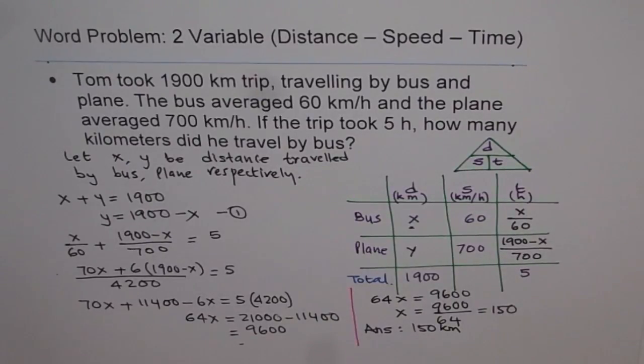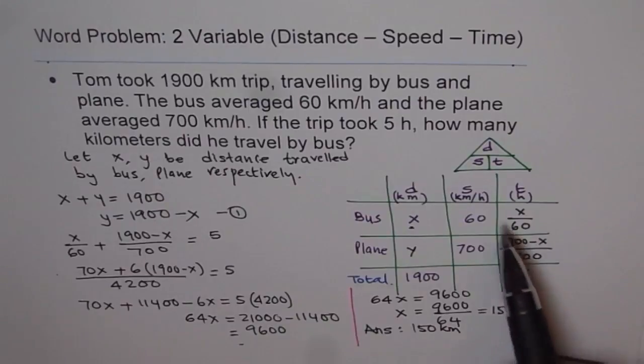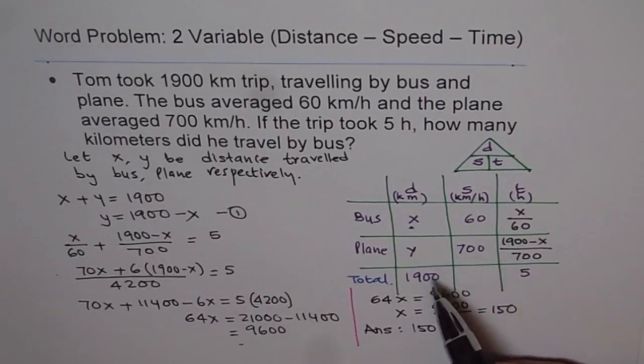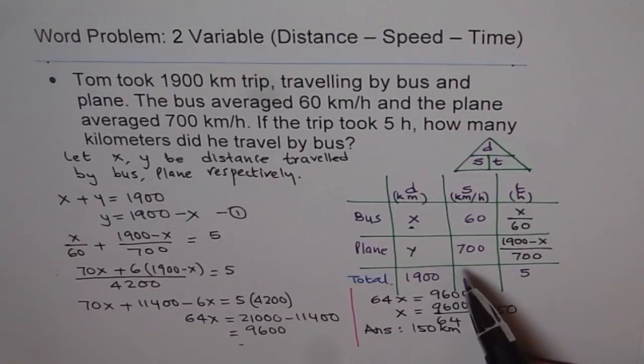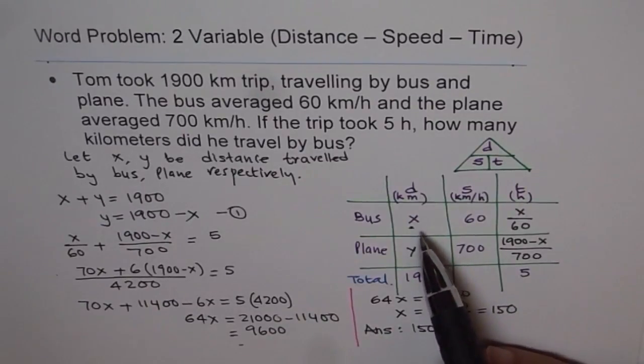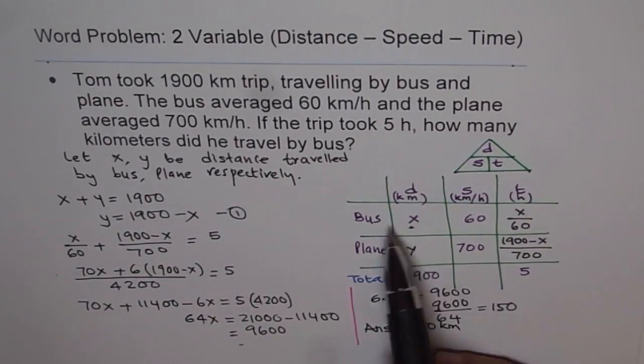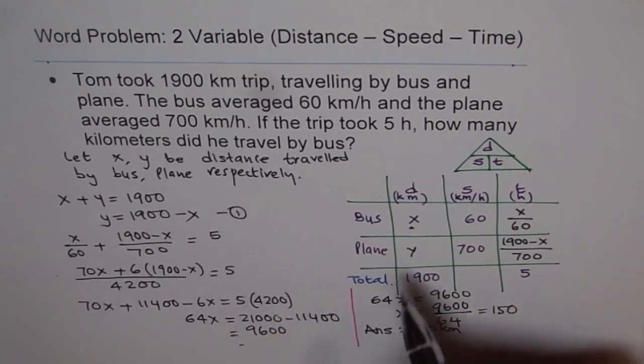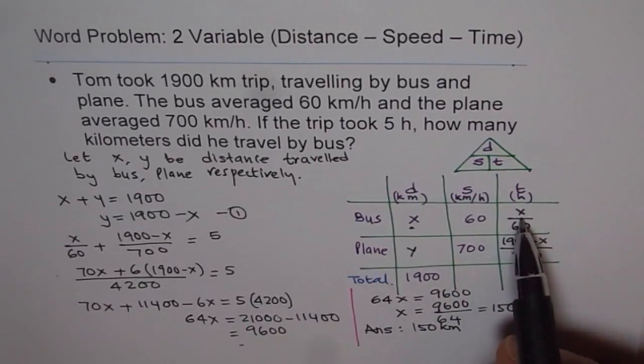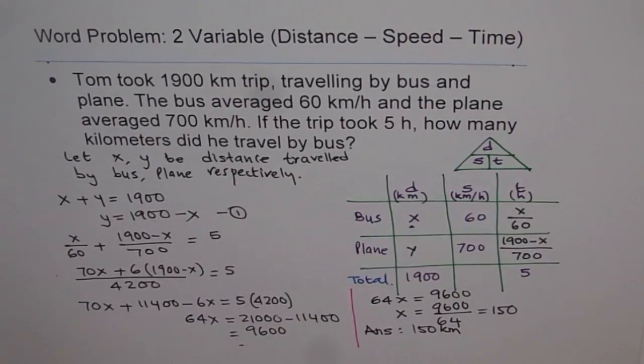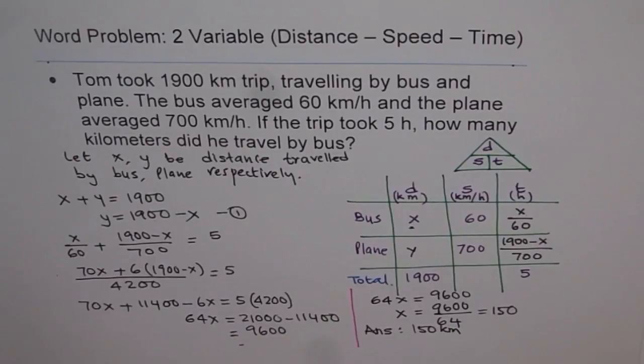So the strategy here is: first, put the information properly in a tabular form. Like we have distance, speed, time. Knowing the relation that distance is speed into time, remember this triangle. When you put the information in the tabular form, identify the variables. Variables are dependent on what you need to find. It says, how many kilometers did he travel by bus? Start with that. Let X be the distance traveled by bus, Y for plane, total distance 1900. And time: distance divided by speed. Total time 5. Add them up, equate to 5, solve, and put down your answer with units. So that is the strategy to be followed in such problems. I hope you understand and appreciate it. Thank you.